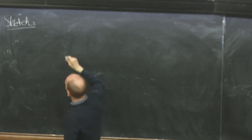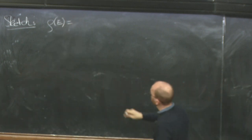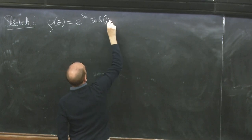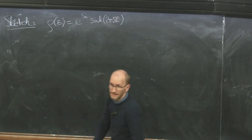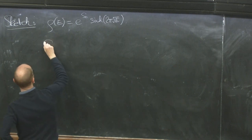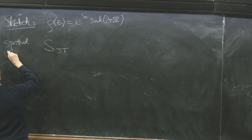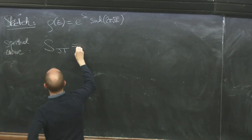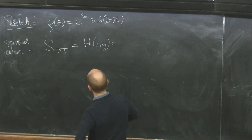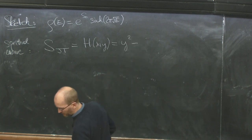I am only going to give a sketch. It starts by recalling that the spectral density of JT follows from the disk one-point function — the famous e to the S_0 times the hyperbolic sine of 2 pi times the square root of the energy. We take this as input and use it to define a spectral curve S_JT. The spectral curve is an auxiliary equation H(X,Y) equals zero, where Y squared minus one over 4 pi squared times sine squared of 2 pi sqrt(X) equals zero, and X is sort of like minus E.